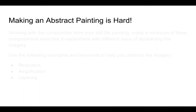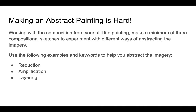But don't be fooled — making abstract art is hard. How can you take the world as you see it and convey it in a way that is interesting? This takes effort, good craftsmanship, and perhaps some strategy. For this assignment, I would like you to work with the compositions from your still life painting. We are going to look at three key words as potential ways to approach abstraction.